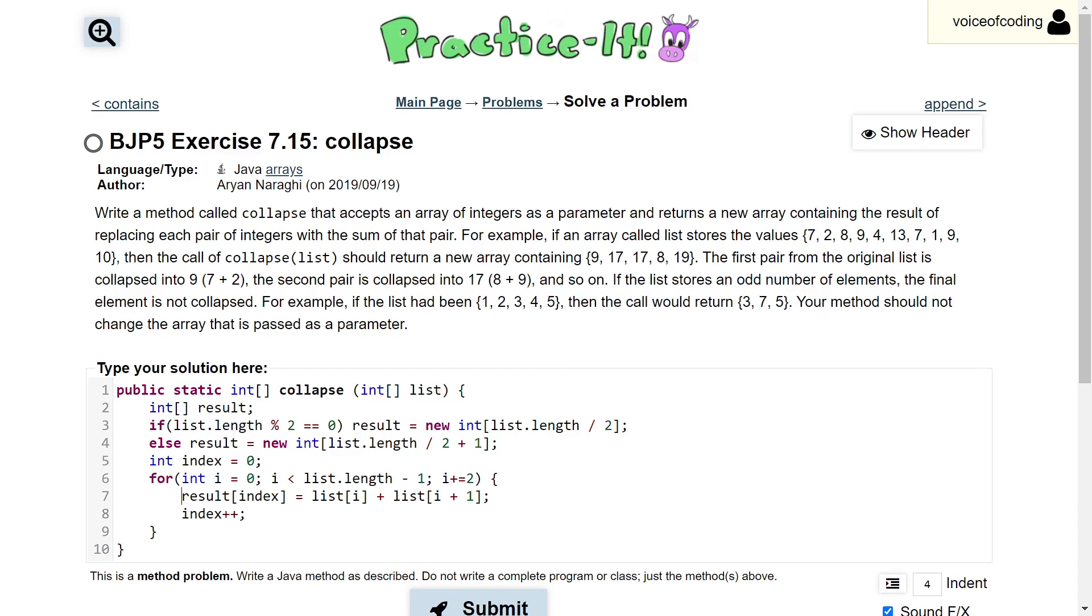However, for list, we want to look at indexes 2 and 3, because we already looked at 0 and 1, which is why we're increasing by 2. That way, on the next iteration, we're looking at list at index 2, and then list at index 2 plus 1, which is 3.